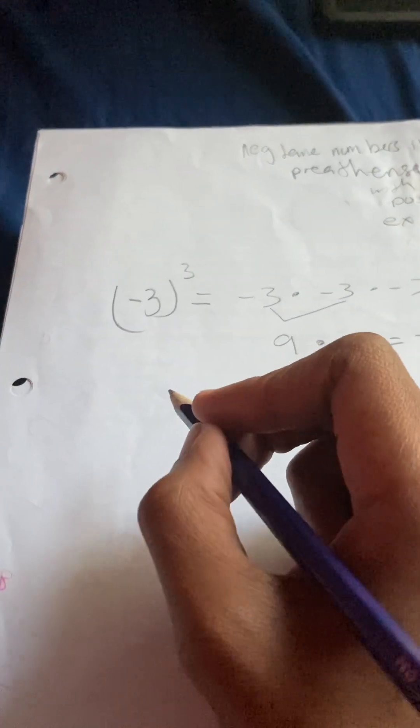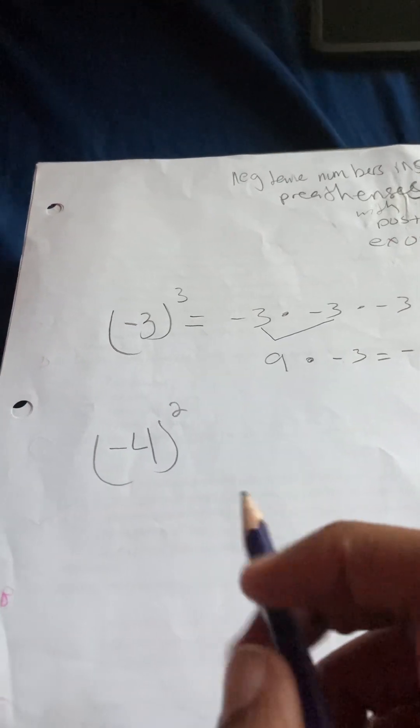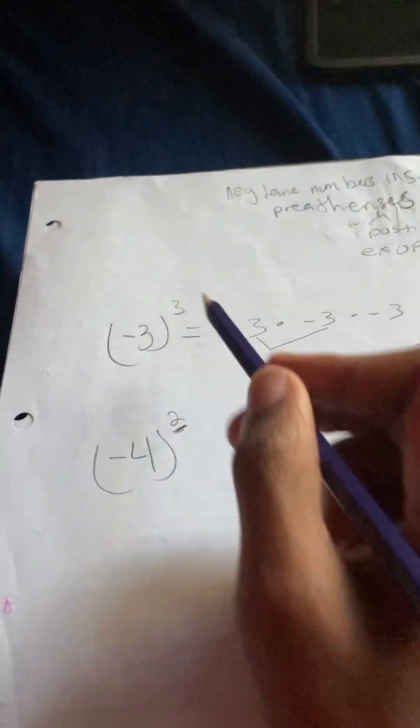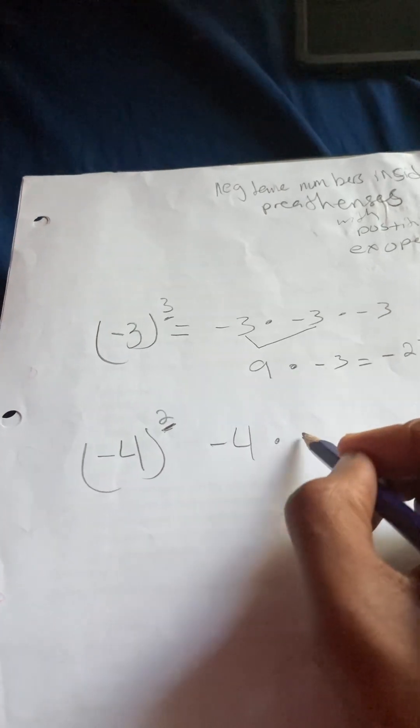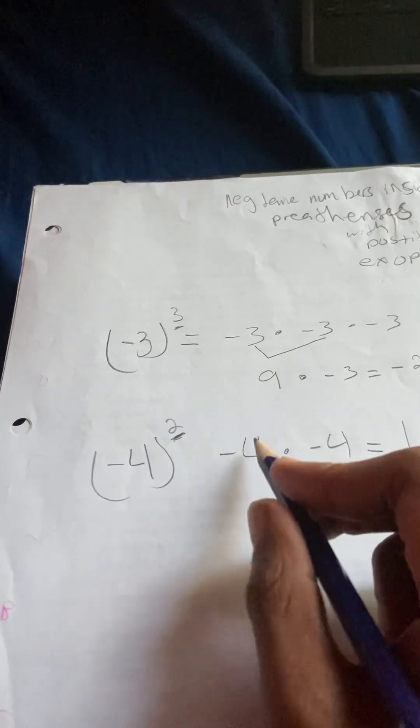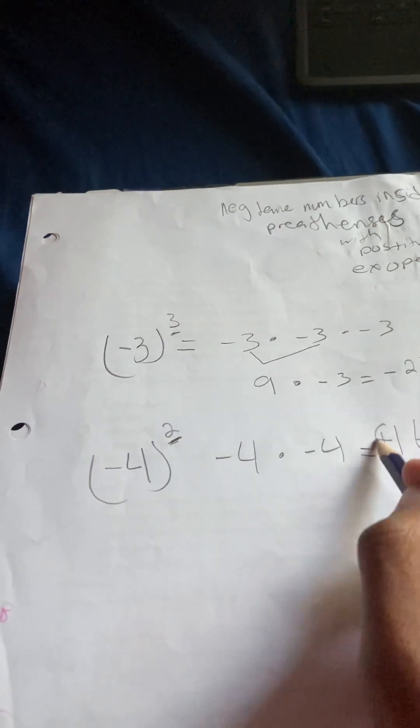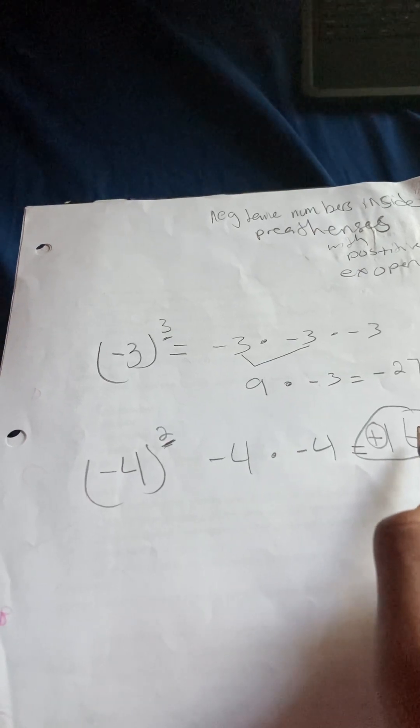Let's do two more examples. Let's do negative 4 to the second power. So number two, we have to multiply 4 two times because that's what the exponent is telling us, same thing as before. So we're going to do negative 4 times negative 4 equals 16, because negative times a negative equals a positive. This represents a positive or plus, so the answer is positive 16.